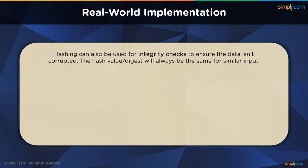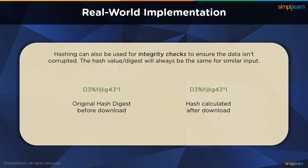Apart from password storage, hashing can also be used to perform integrity checks. When a file is uploaded on the internet, the file's hash value is generated and uploaded along with the original information. When a new user downloads the file, they can calculate the digest of the downloaded file using the same hash function. When the hash values are compared, if they match, then file integrity has been maintained and there has been no data corruption.